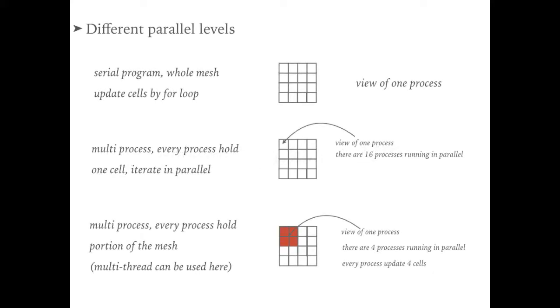Let's discuss different levels of parallelism. One way to distinguish different parallel methods is to consider the scope of the mesh that every process or thread can detect. For example, for the serial program, there is only one thread, and this thread will go through every cell in a mesh one by one. Therefore, the thread can access the whole mesh.